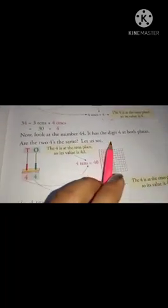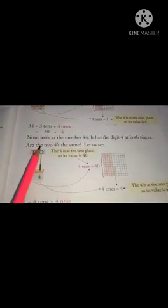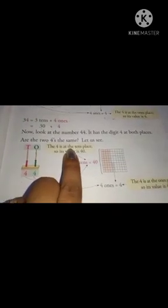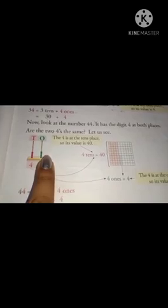Now, look at the number 44. It has the digit 4 at both places. Are the two 4s the same? So, these two 4s, what are the same? Let's see. The 4 is at the tens place. So, this is in tens place and this is in ones place.